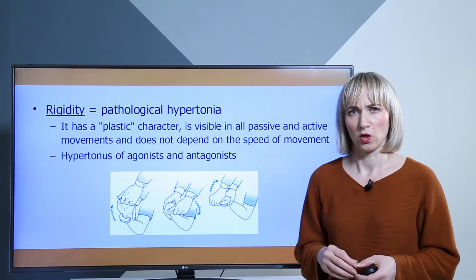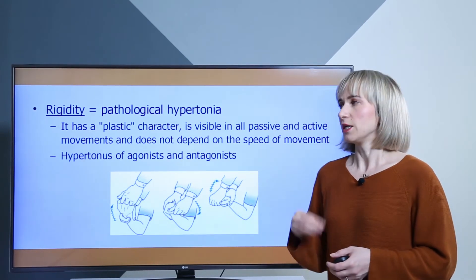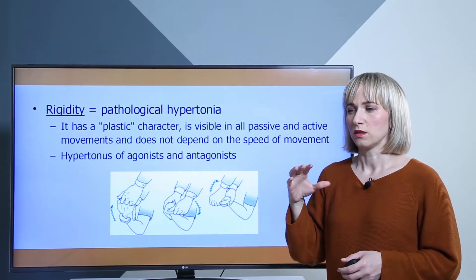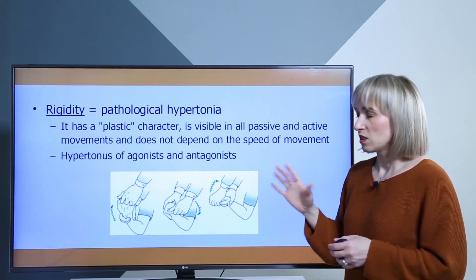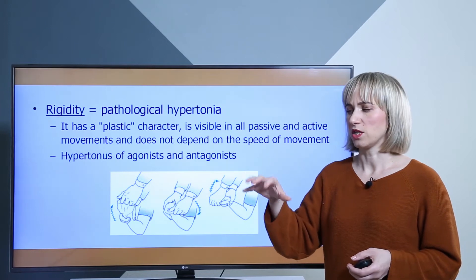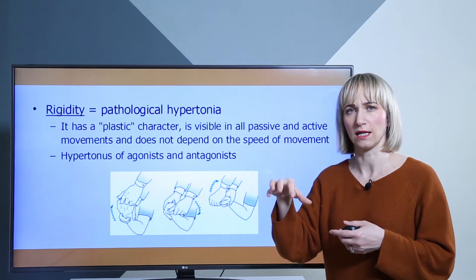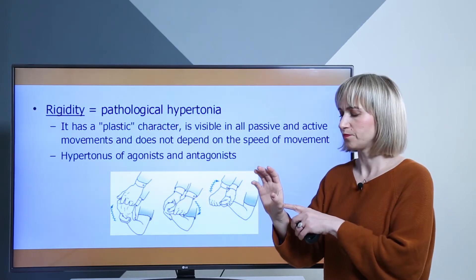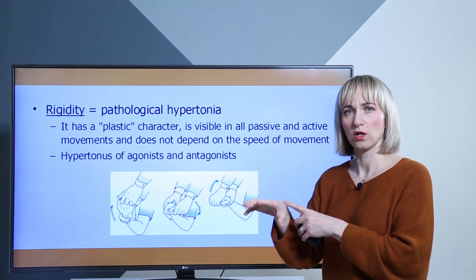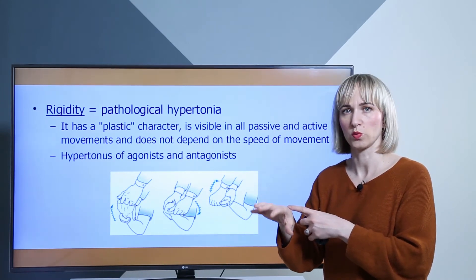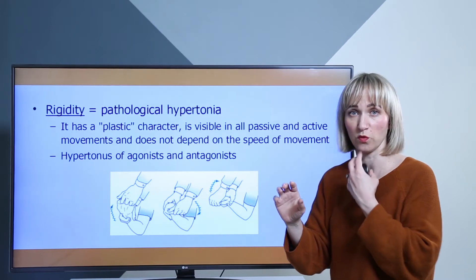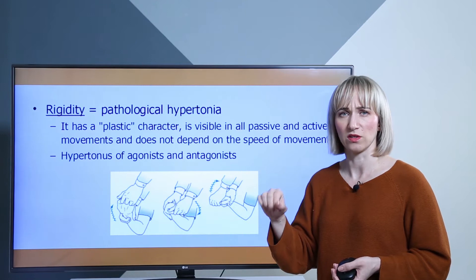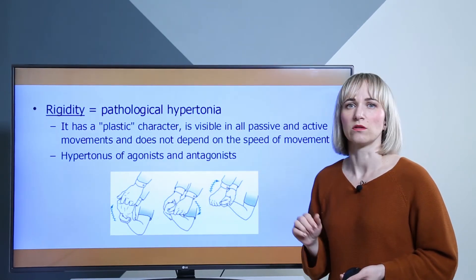Rigidity is a typical pathological hypertonus very well known in Parkinson's disease. It has a plastic character, which means there is hypertonus of both agonist and antagonist muscles in different movements of the body, and it is not dependent on the speed of movement. While you are testing flexion and extension of the hand, you can feel a pathological hypertonus that doesn't allow any passive movement with the patient. You can feel difficulty doing the movement in every direction — this is rigidity.